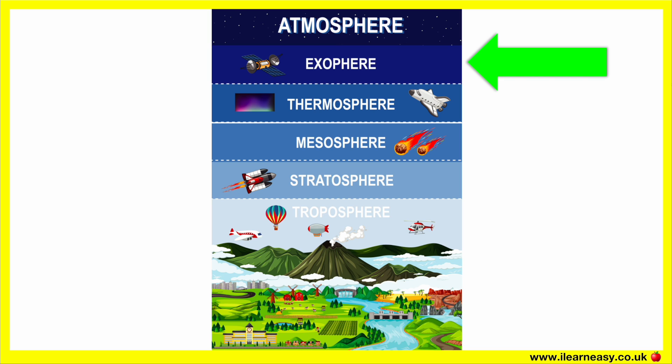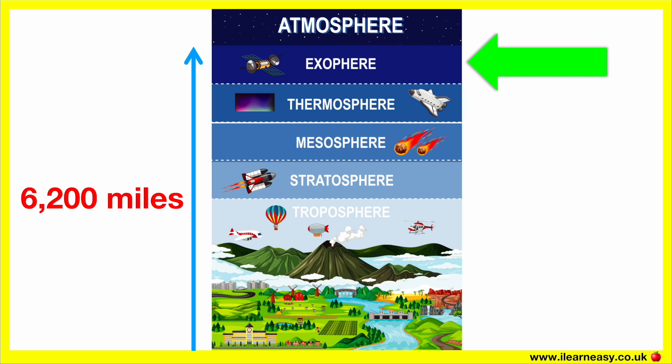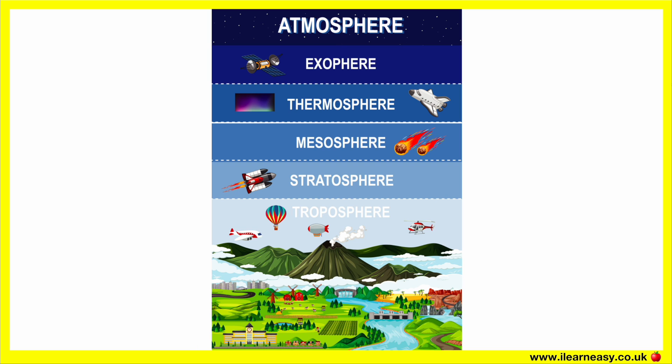The exosphere is located about 6,200 miles above the Earth's surface and is the highest layer of the Earth's atmosphere. The air is very thin and there is no weather at all. The molecules found in the exosphere are of extremely low density, so this layer doesn't behave like a gas and the particles escape into space. Most Earth satellites orbit in the exosphere.